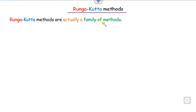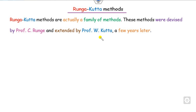Runge-Kutta methods are actually a family of methods. Why do we call it a family? Because it defines several methods under this category. These methods were developed by Professor C. Runge and then extended by Professor W. Kutta a few years later. That is why this method is named the Runge-Kutta method.